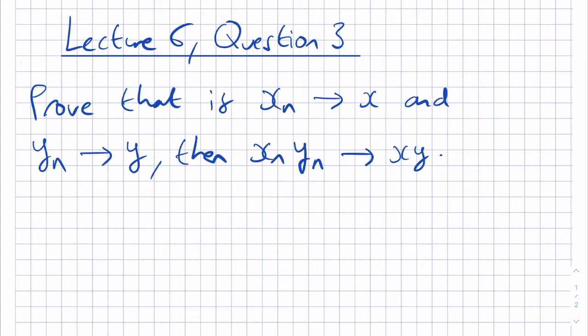The question says, Prove that if Xn converges as a sequence to X and Yn converges to Y, then the product of Xn and Yn converges to X times Y.